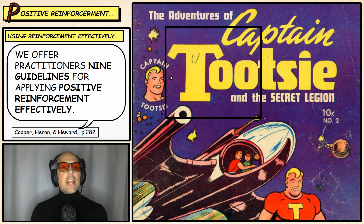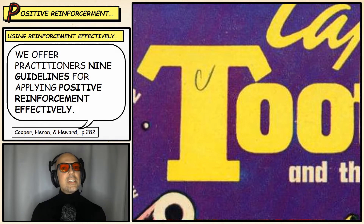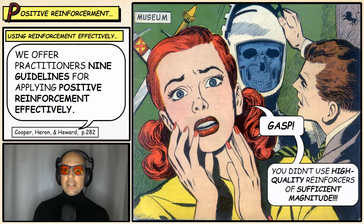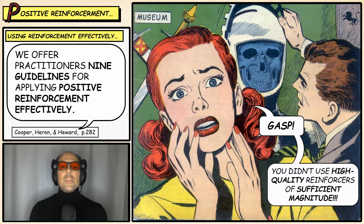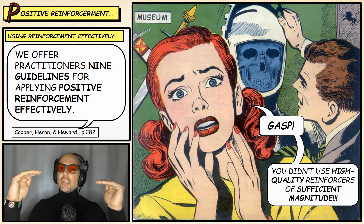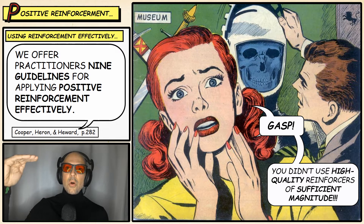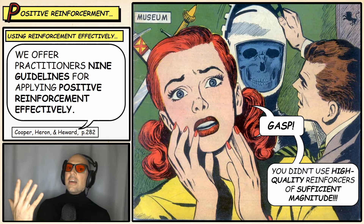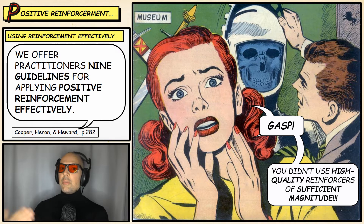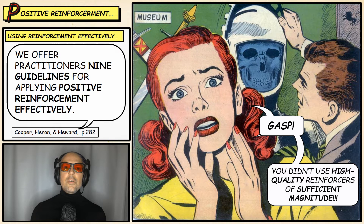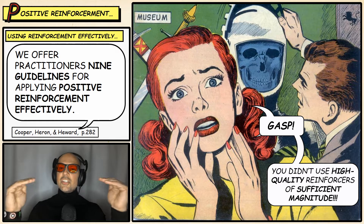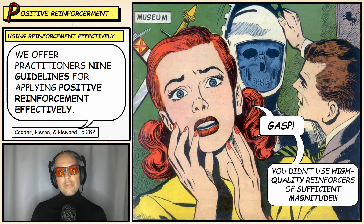Guideline number two is a bit more frustrating because there's no exact formula, but basically you want to use high quality reinforcers of sufficient magnitude. After you've established your establishing operations, make sure your reinforcers match the difficulty of the behavior you're trying to reinforce. If it's a very difficult behavior, use a high quality reinforcer; if it's less difficult, you can pull back. You want them motivated, but you don't want to give it all away.